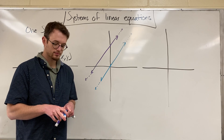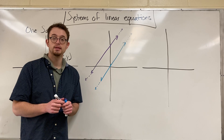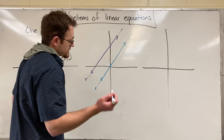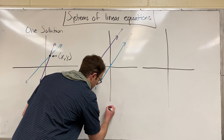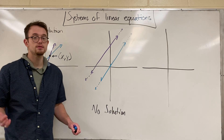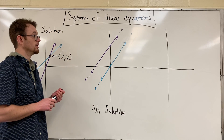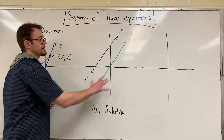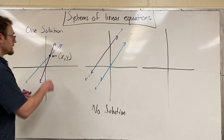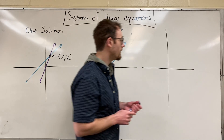So another type of solution to a system of two linear equations is that there isn't a solution — no solution. Sometimes lines just don't intersect, and that is only when they are parallel. If you see a graph that looks like this with parallel lines, you're going to put no solution because there isn't a point of intersection if they don't meet.